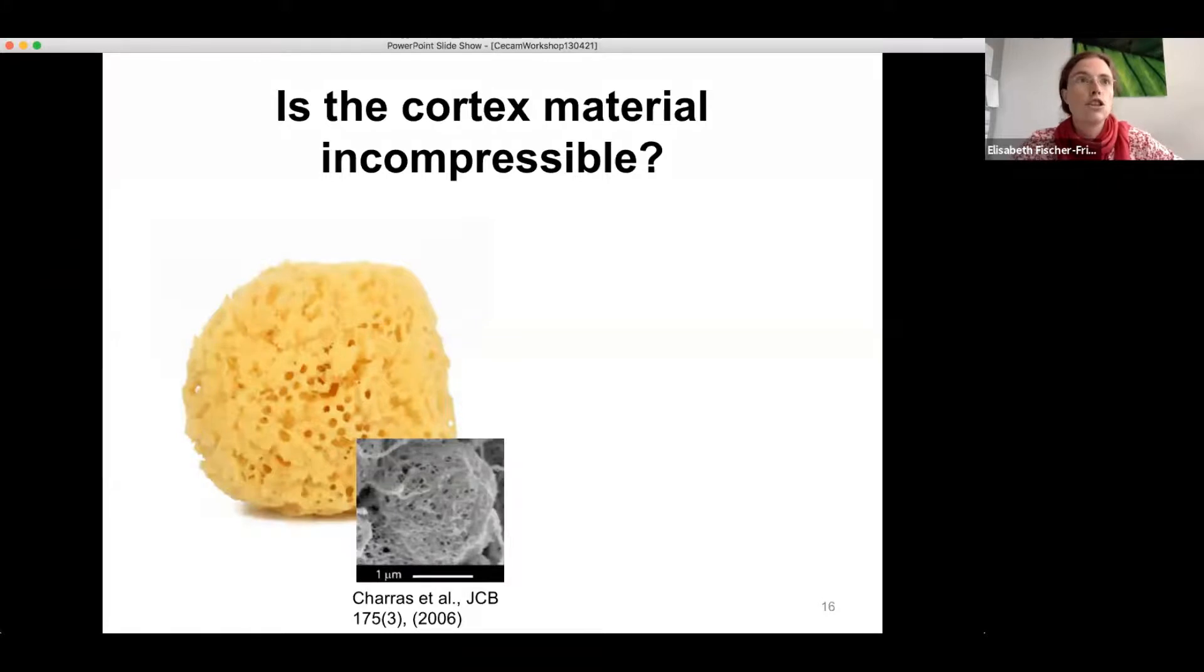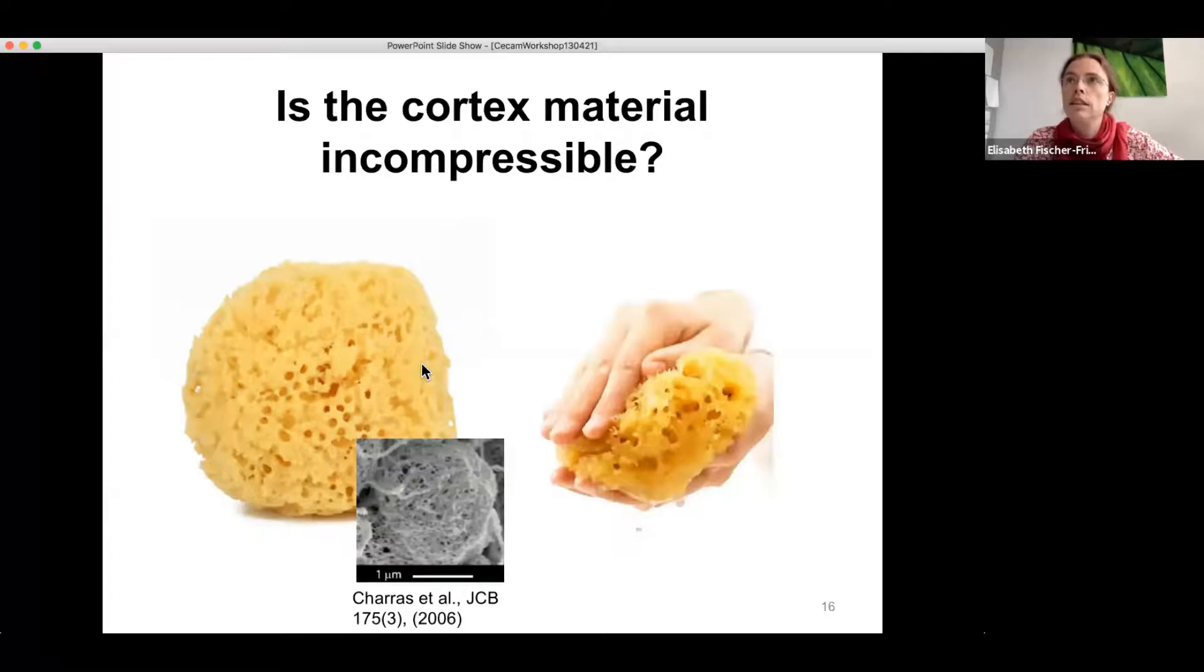However, as you can see here with this analogy of the sponge, if you compress it slowly, you can squish out the water out of the pores. And in this way it would clearly be compressible. So we challenged this assumption of incompressibility which was prevalent in the field and set out to measure the Poisson ratio of the cortex and also independence of the timescales. And in fact, this is one of the very few measurements of the Poisson ratio of the cytoskeleton because it's a very difficult to access parameter of cell mechanics.